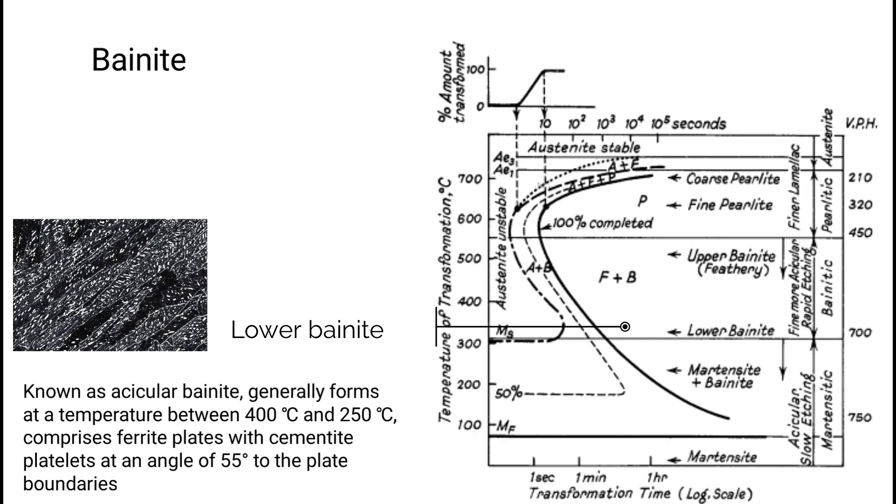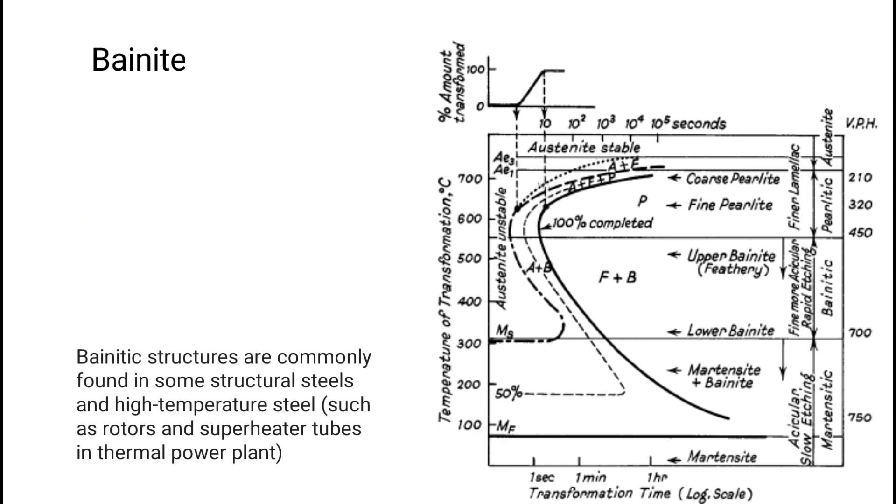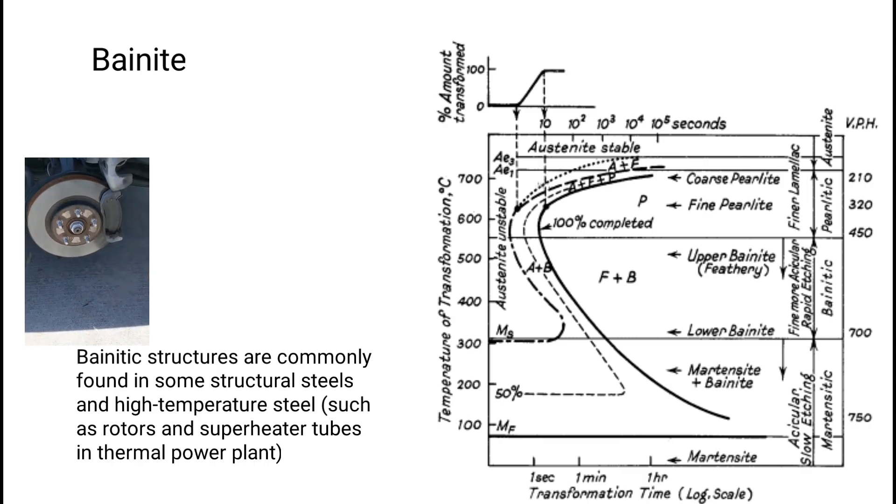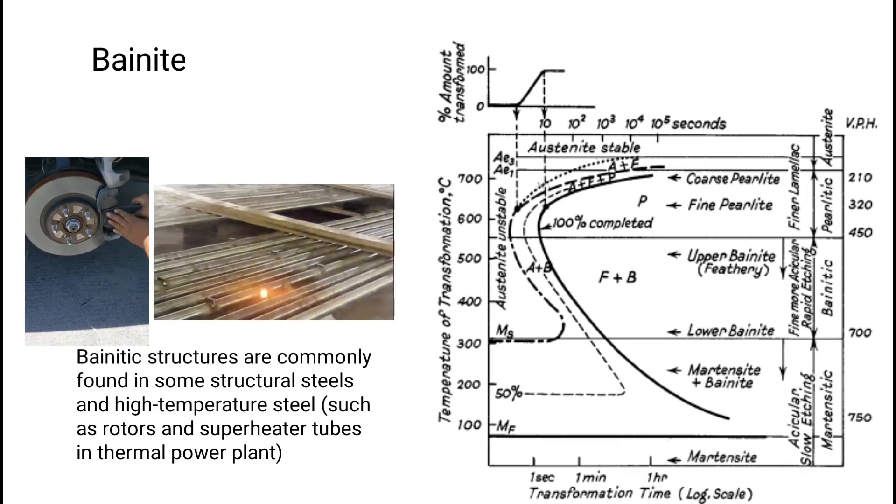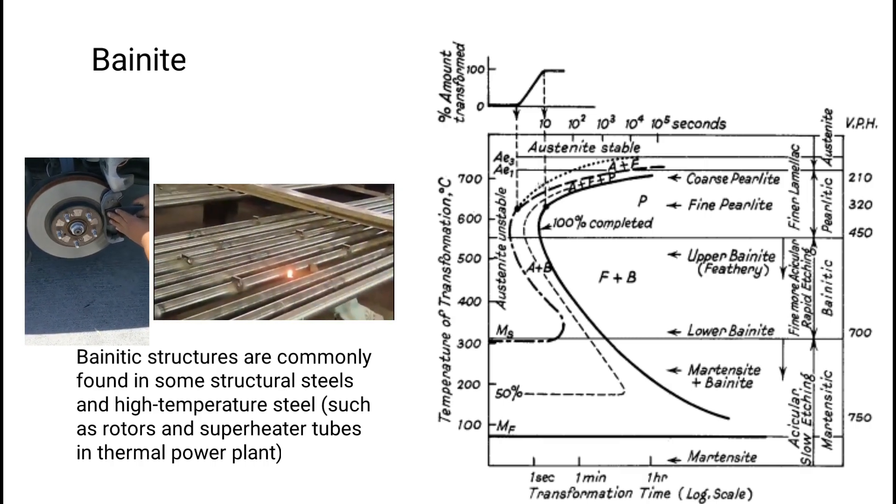Lower bainite, known as acicular bainite, generally forms at temperatures between 400 and 250 degrees Celsius, comprises ferrite plates with cementite platelets at an angle of 55 degrees to the plate boundaries. Bainitic structures are commonly found in some structural steels and high-temperature steel such as rotors and superheater tubes in thermal power plants.